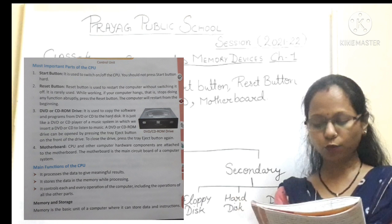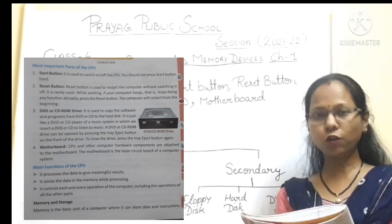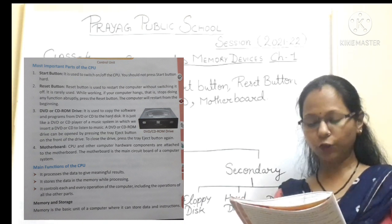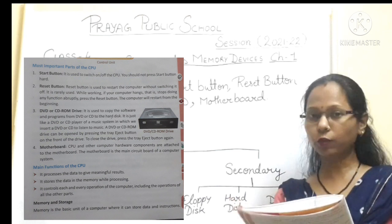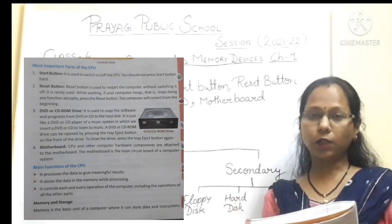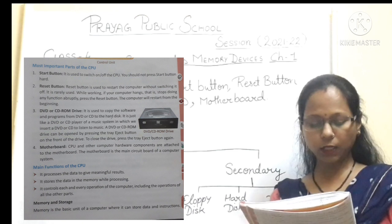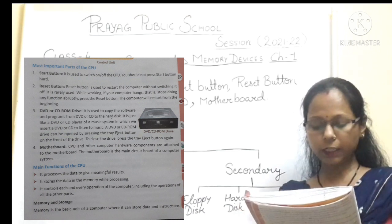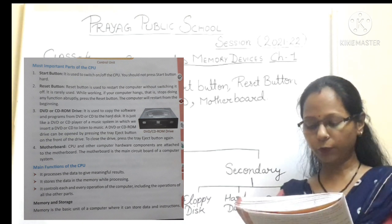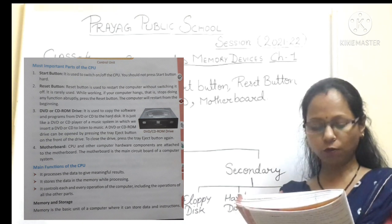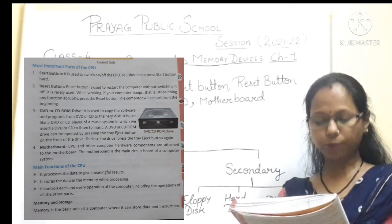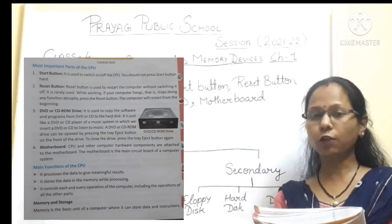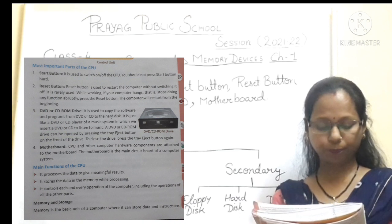Next are the main functions of the CPU. It processes the data to give meaningful results. It stores all the data in the memory while processing. CPU का काम है meaningful result provide करना, memory को control करना. It controls each and every operation of the computer including the operations of all other parts — और जितने भी operations computer के अंदर हो रहे हैं उन सब को manage करना है.